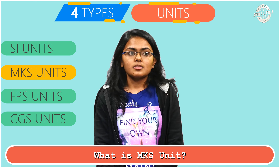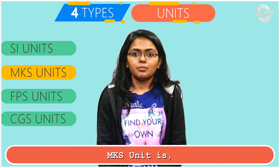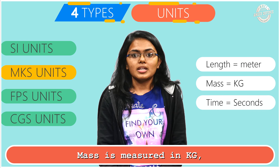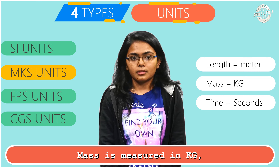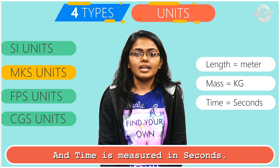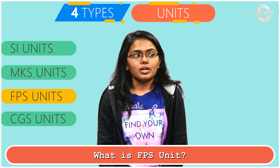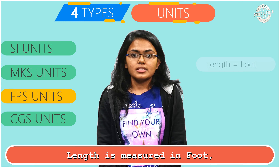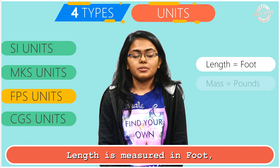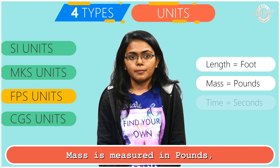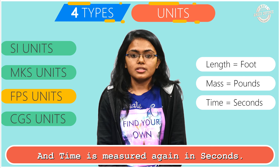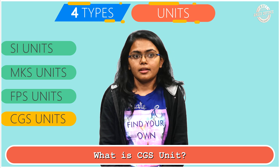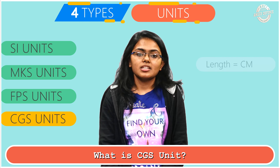In MKS unit, length is measured in meters, mass is measured in kilograms, and time is measured in seconds. In FPS unit, length is measured in foot, mass is measured in pounds, and time is measured in seconds.